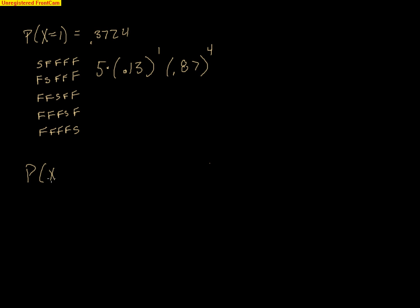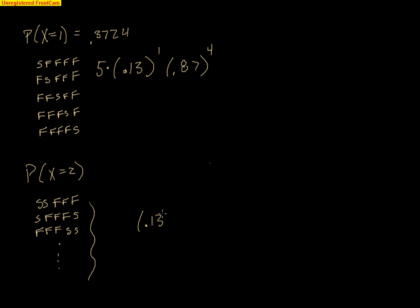Now let's find the probability that two people are left-handed. This gets even tougher because I need two successes and three failures, and there are many different orderings. The question becomes: how do I know I've thought of every possibility? The good news is all options look the same — 0.13 squared times 0.87 to the third — but I need to know how many ways it can happen.